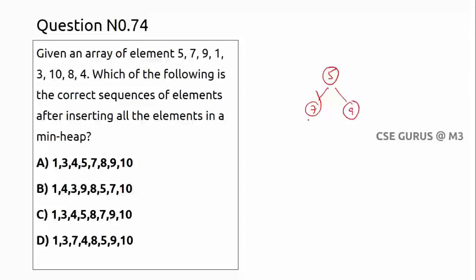Let's insert the elements step by step. Insert 5, then 7 — 7 is greater than 5, satisfied. Then 9, satisfied. Now insert 1: 1 is not greater than 7, so swap. Then 1 is not greater than 5, so swap again. Now insert 3: 3 has to come in, and 3 is less than 5 so swap. 3 is greater than 1, so satisfied.